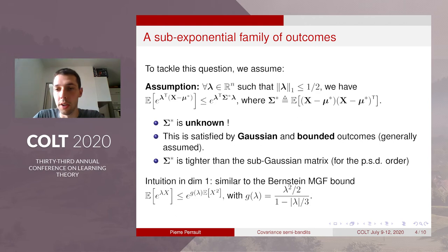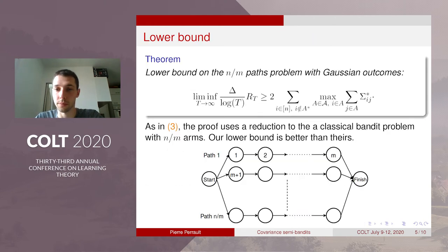So in this bound we have an intuition for the dimension one which reduced to a Bernstein MGF bound, the classical one.